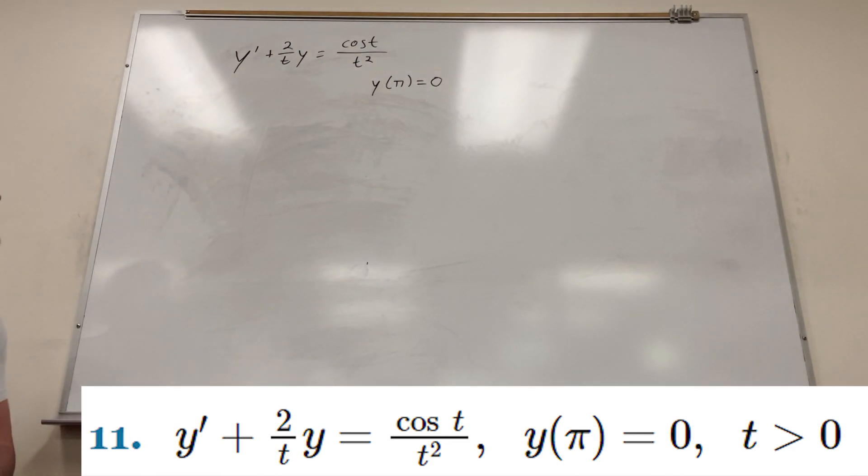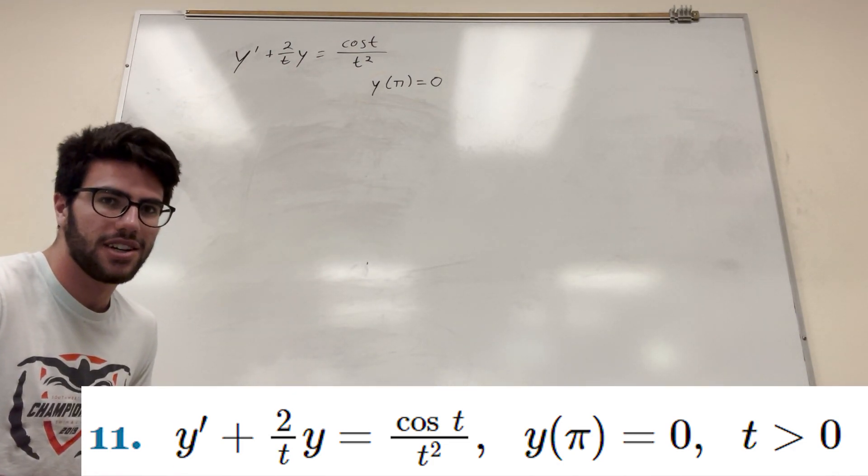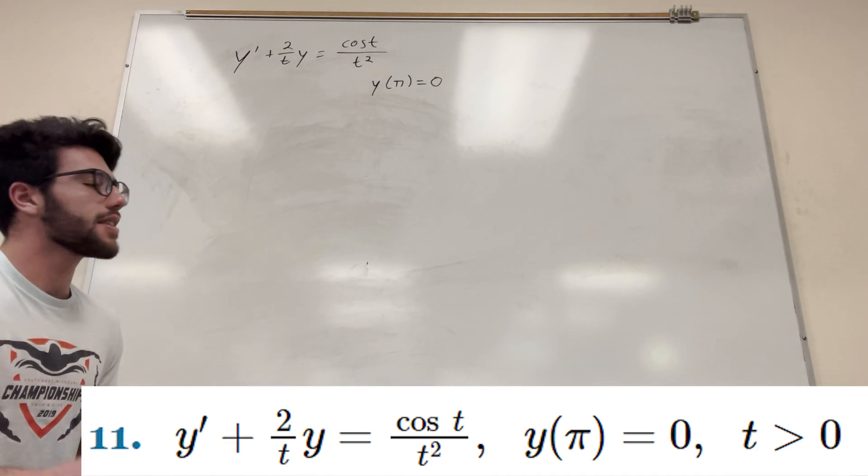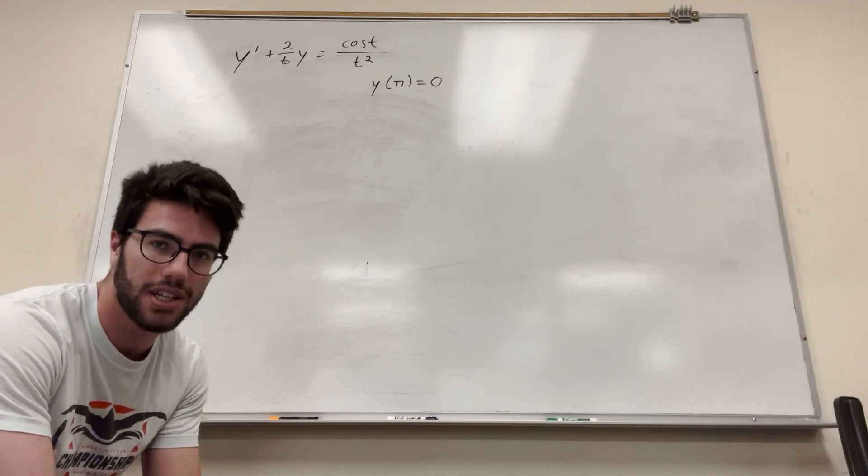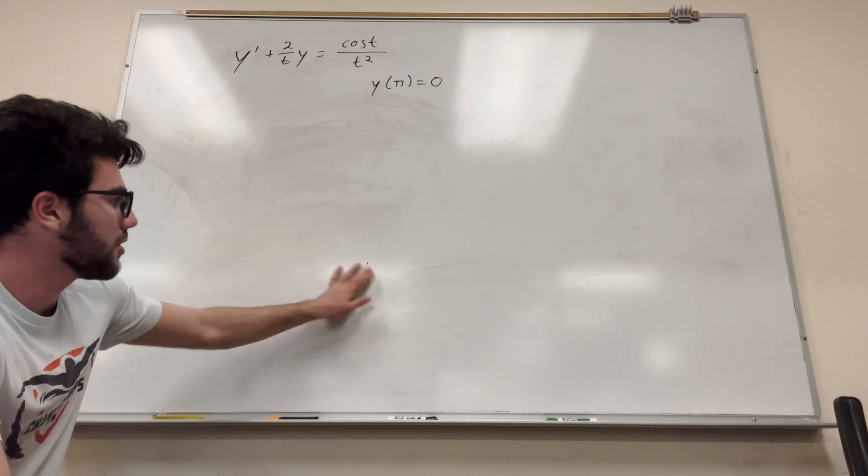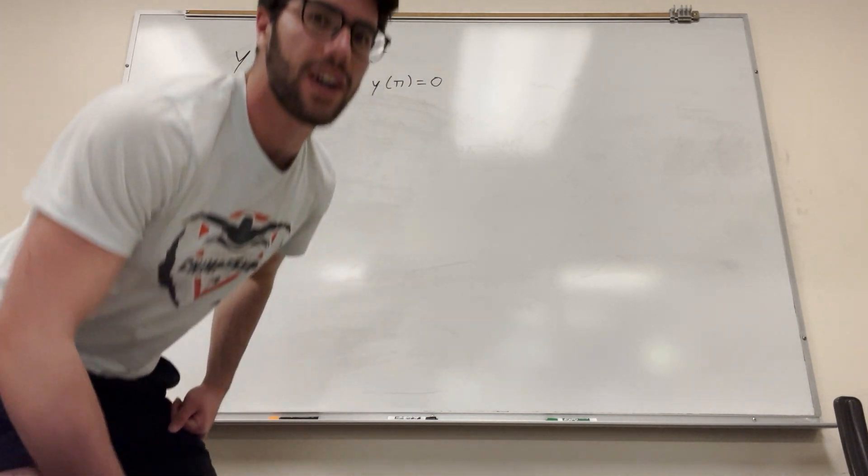It says y prime plus 2 over t times y is equal to cosine of t over t squared. And it gives us initial condition. So when it gives us initial condition, that means we're going to find a particular solution and not just a general solution. So first, you do have to find the general solution, and then you have to find the particular solution.